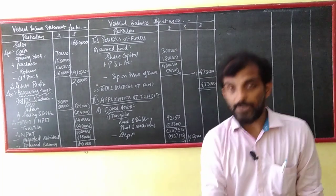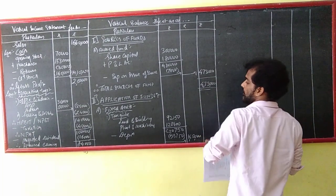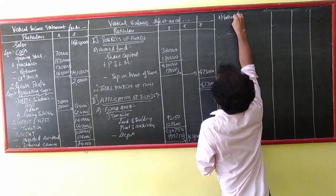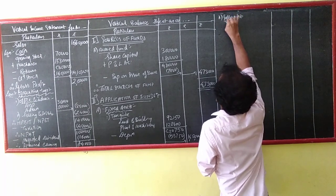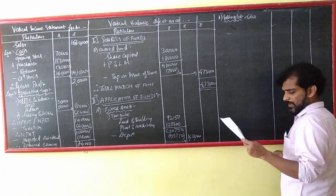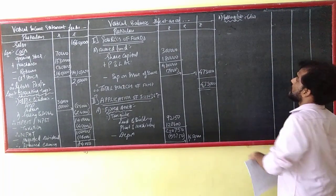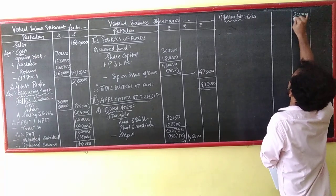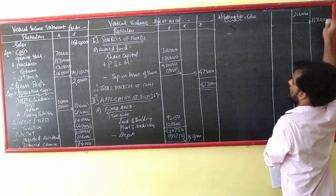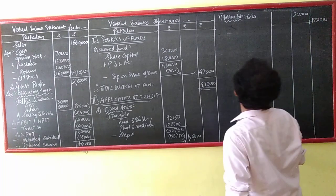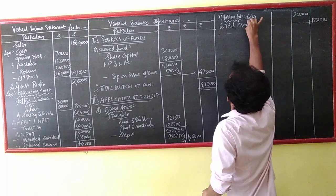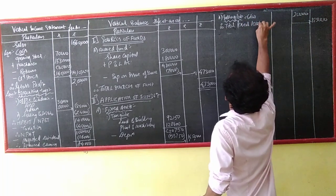Good will - the other one. Second intangible asset. I have a goodwill. Net fixed assets total - 5,000. Therefore total fixed assets - total fixed assets. Then reading number: investment. As it is, I have no investment.